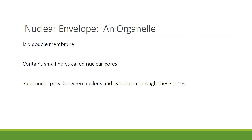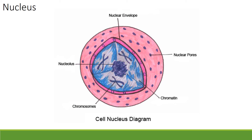The nuclear envelope is a highly regulated membrane barrier that separates the nucleus from the cytoplasm in eukaryotic cells. It is a double membrane, and it contains small holes called nuclear pores. Substances can pass between the nucleus and the cytoplasm through these pores. Here is a diagram of the nucleus showing the nuclear envelope, the nucleolus and the nuclear pores, and chromatin before it becomes chromosomes.